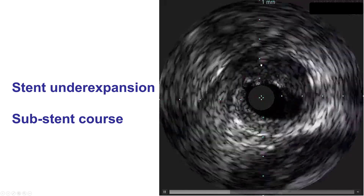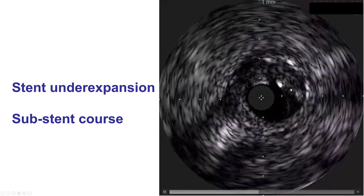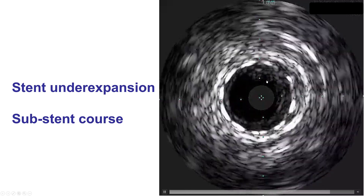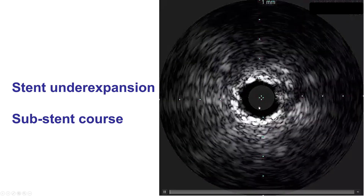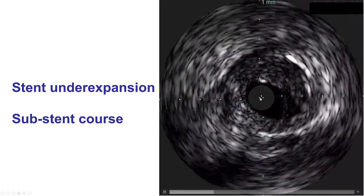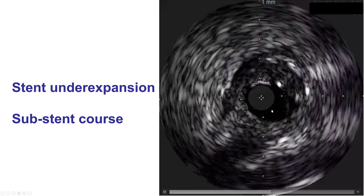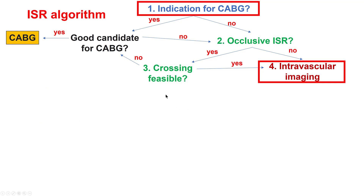Sometimes when we try to cross these occlusions, the wire may go outside the previously placed occluded stent, and in these cases of extra-stent wiring, the new stent may actually crush the pre-placed stent and provide a good result with acceptable rates of restenosis. If we are able to cross through the stent, or for non-occlusive in-stent restenosis, a key parameter is to perform intravascular imaging to understand the mechanism of in-stent restenosis.